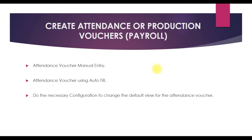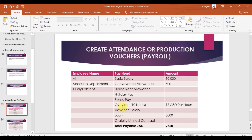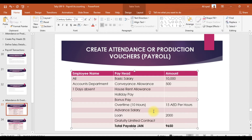Here we have an example. The employee is Ali with a basic salary of 10,000. Ali is working under the accounts department and is absent one day. Conveyance allowance and house rent allowance will be calculated on total earnings. There is no holiday pay, no bonus pay. Overtime is 10 hours at 15 dirhams per hour. There is no advance salary, loan is 2,000 dirhams, and there is a limited contract gratuity.